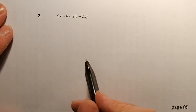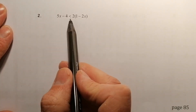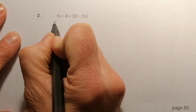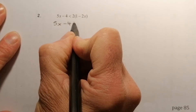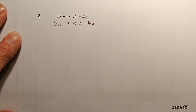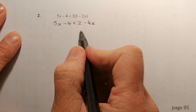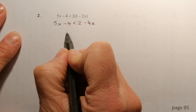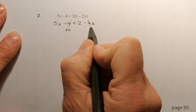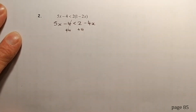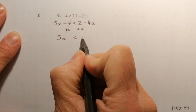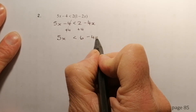Question 2: I've got a bracketed term on the right, so I'm going to multiply the bracket out first, giving me 5x minus 4 is less than 2 minus 4x. Freeze the video and try it yourself. First, I want to get rid of the minus 4 on the left, so I add 4 to both sides — that eliminates that term and leaves me with 5x is less than 6 minus 4x.